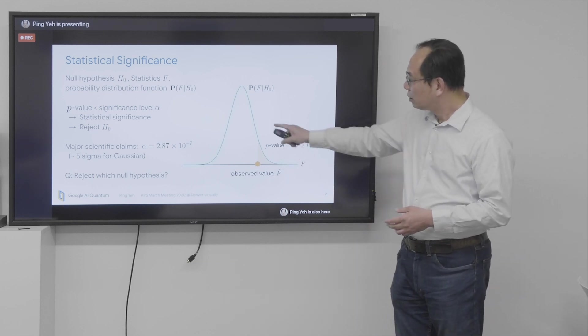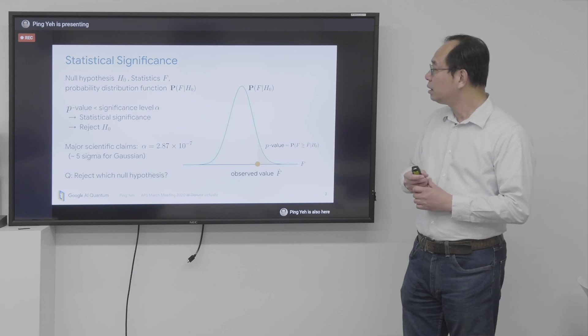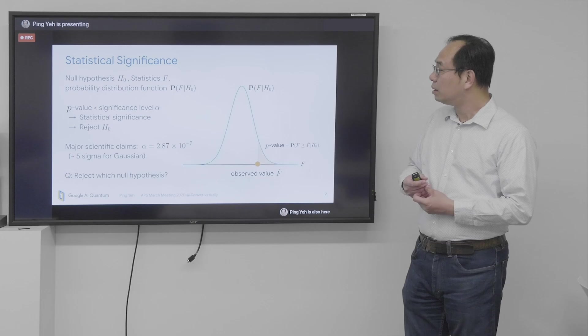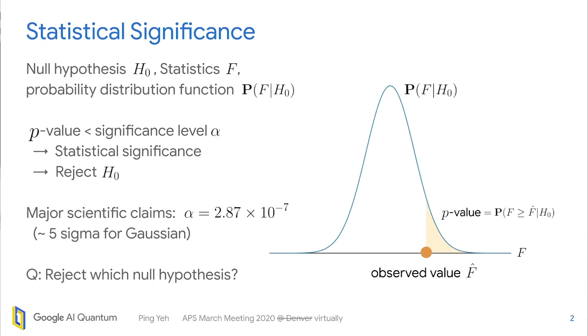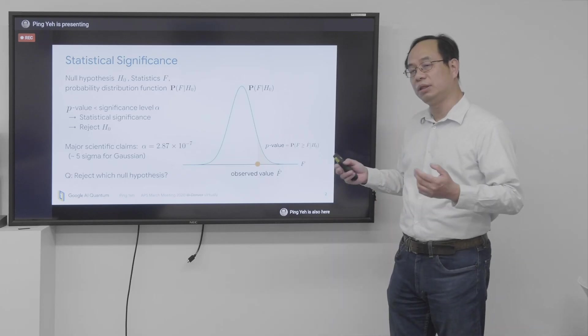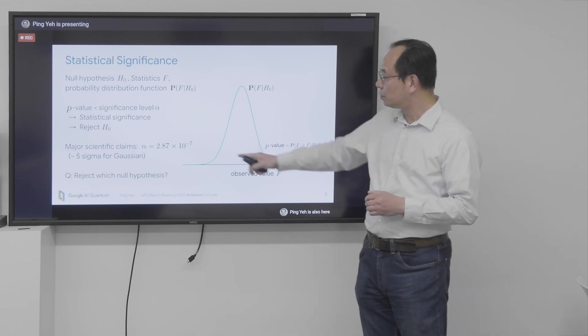And the tail probability gives you the p-value. And if p-value is smaller than a predefined significance level alpha, then we say it is statistically significant. And we reject Hnull. And for major scientific claims, we usually set alpha to a so-called five sigma level for Gaussian, which corresponds to this value.